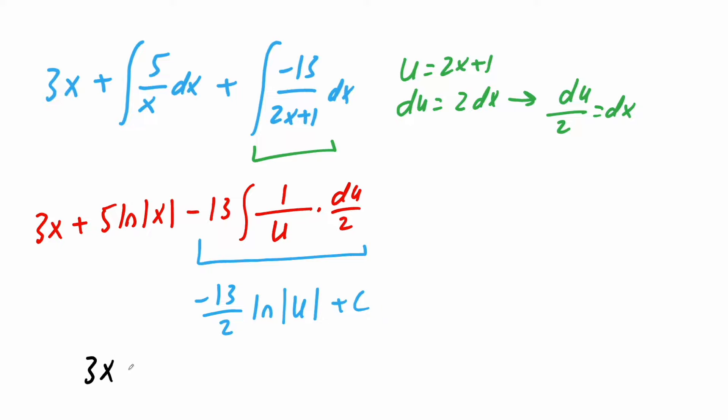So we're going to get 3x plus 5 ln, the absolute value of x, minus 13 divided by 2, ln, the absolute value of u, but we know u is 2x plus 1. So let's swap it back. 2x plus 1, close it, plus c. And this right here is our final answer. And that's all we need to do for this problem.